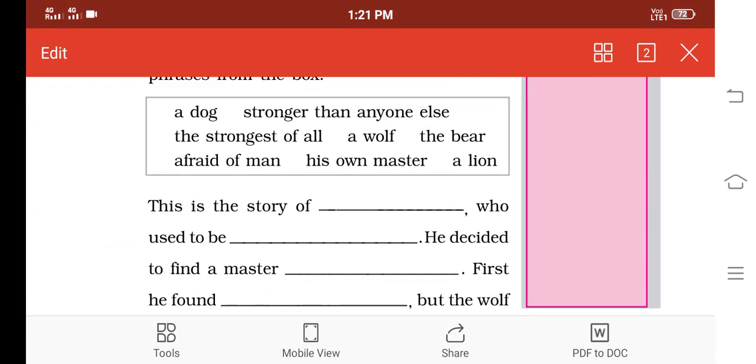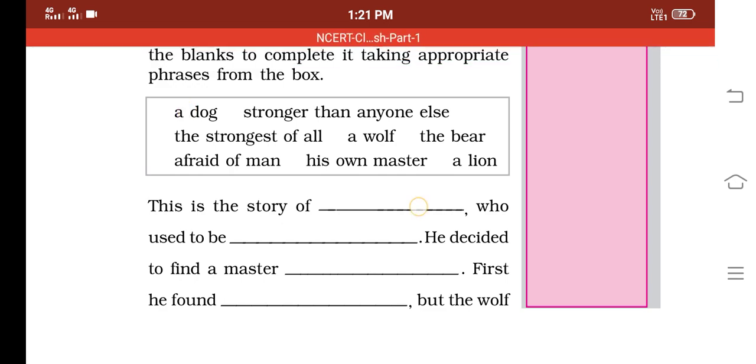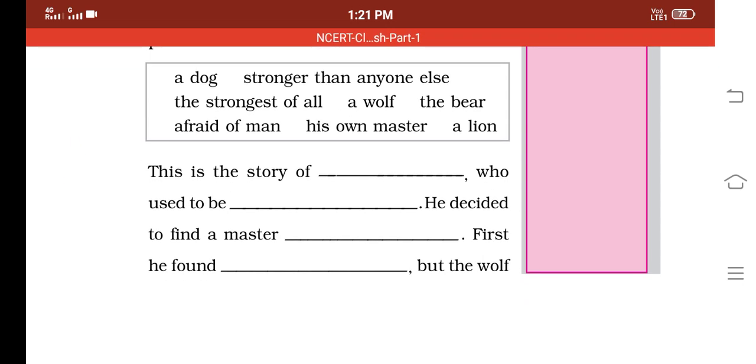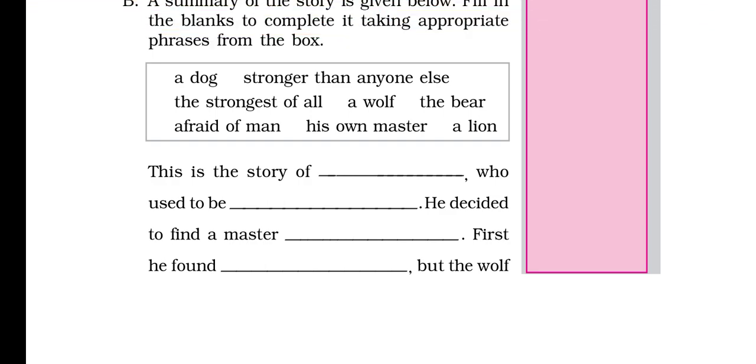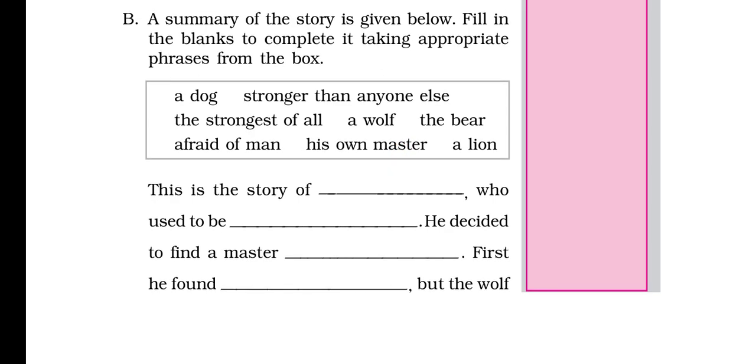The first sentence: 'This is a story of...' Yes, the dog. You have to write here 'a dog.' Dog is the answer. Then, 'who used to be...' He is searching for a master. He used to be his own master. You have to write 'his own master' there.